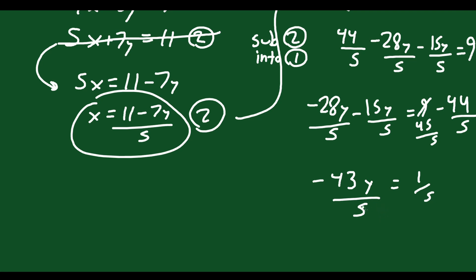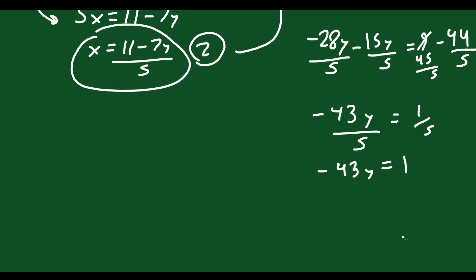You can multiply both sides by 5. The 5s are going to go away. You could have done that actually in the previous step. You're going to get negative 43y equals 1. Divide both sides by negative 43. You get y equals negative 1 over 43. So that's your y value. Again, same answer that we got using elimination.